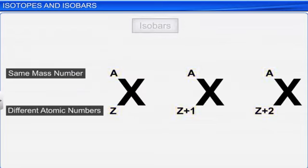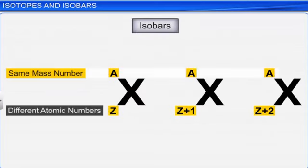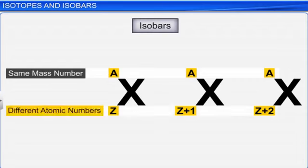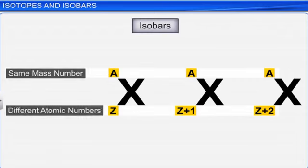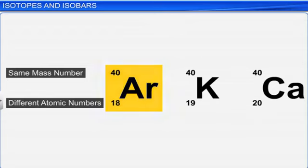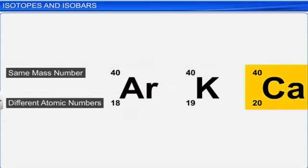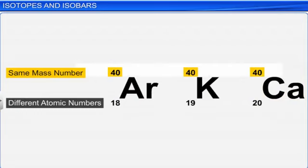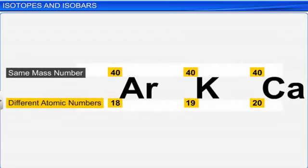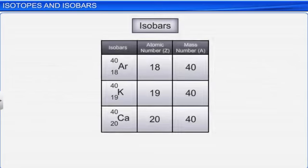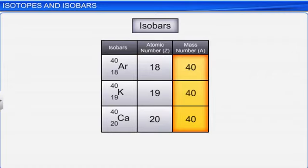Some atoms of different elements are found to have the same mass number but different atomic numbers. For example, ₁₈Ar⁴⁰, ₁₉K⁴⁰, and ₂₀Ca⁴⁰ have the same mass numbers but different atomic numbers. Such atoms of different elements having different atomic numbers but the same mass numbers are called isobars. Isobars have different chemical properties because they have different atomic numbers.